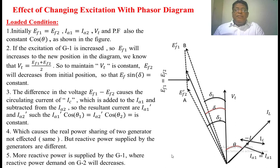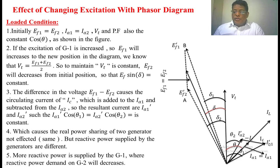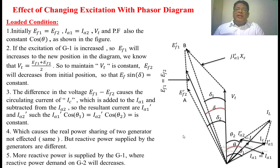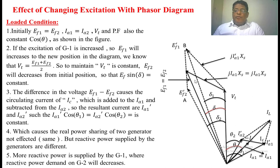Because of this resultant voltage, a circulating current will flow through the two generators under the loaded condition. When the circulating current passes through the two generators, it will be added to the current of the first generator where EF1 dash is present. So the resultant armature current becomes IA1 dash with an angle of theta1. The circulating current is opposite to the current of the second generator, so the resultant current of the second generator will be decreased — becoming IA2 dash with an angle of theta2. The resultant of these two currents equals the total load current.